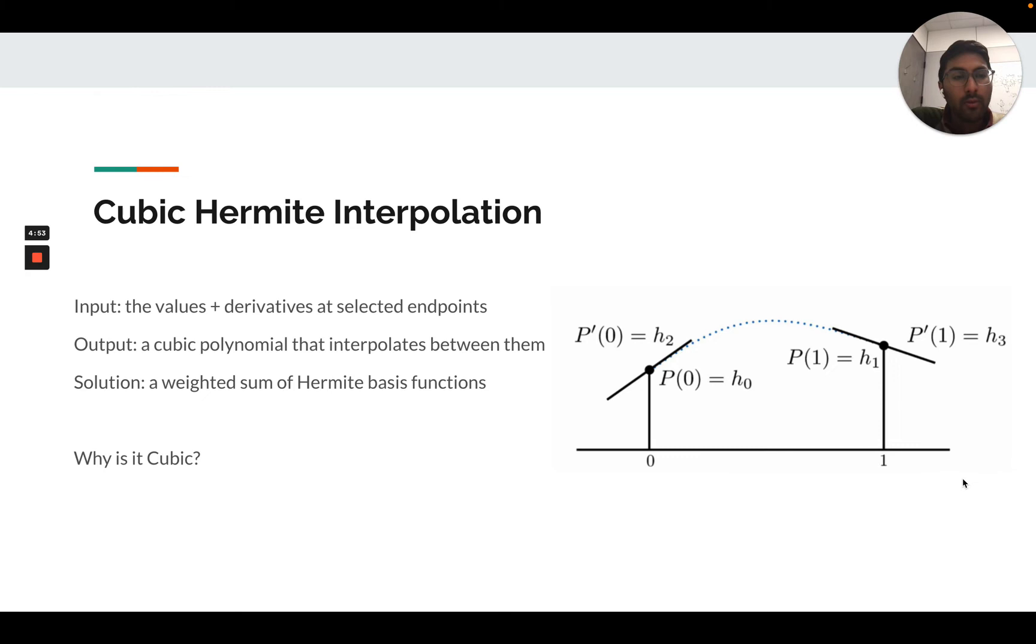You may ask, why is this curve cubic as opposed to quadratic or a higher order? The curve needs to be at least cubic because there's four constraints given as input, four inputs, and a cubic polynomial has four degrees of freedom: the constant and then the coefficients. Higher degree polynomials are kind of underdetermined by these constraints, but you could of course interpolate the points with a higher order polynomial.